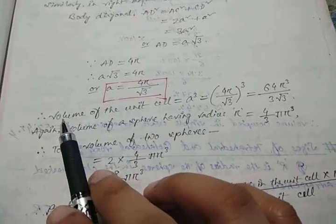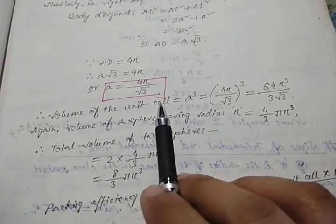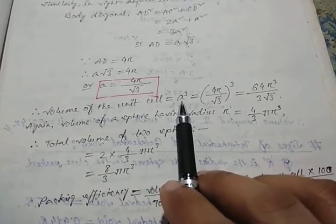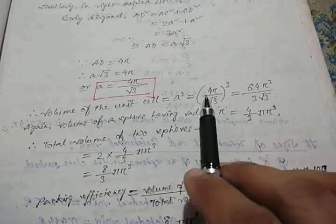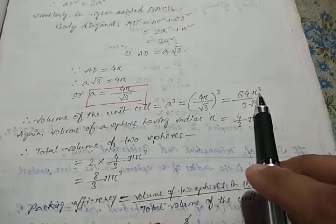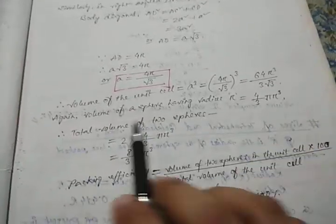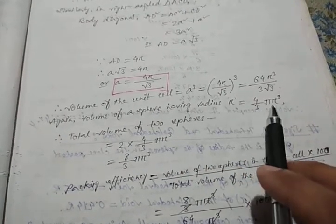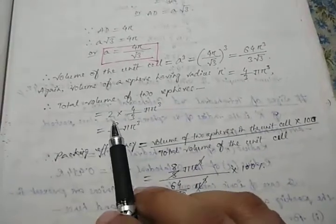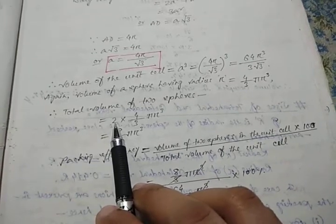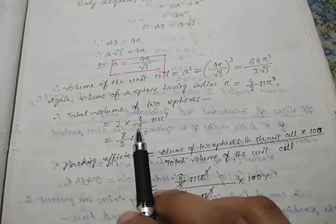Volume of the unit cell is a cubed, which equals 64R cubed divided by 3 root 3. Volume of a sphere is 4/3 π R cubed. For two particles, total volume is 8/3 π R cubed.